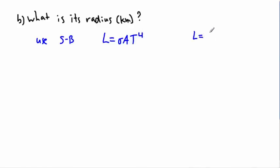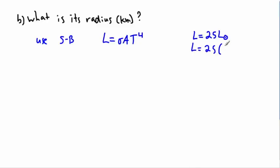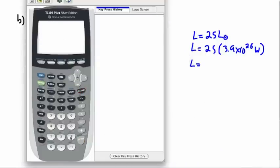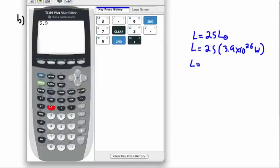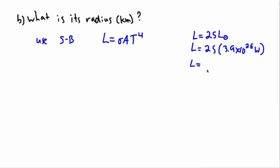We have to use what we know about the luminosity. We were told it's 25 times the luminosity of the sun, so L = 25 × 3.9 × 10²⁶ watts. Let me figure that out with the calculator: 3.9 × 10²⁶ multiplied by 25 gives 9.75. Using two significant figures, that's 9.8 × 10²⁷ watts.